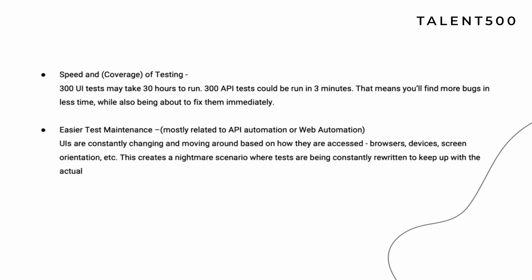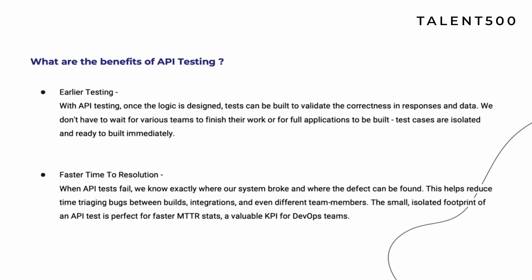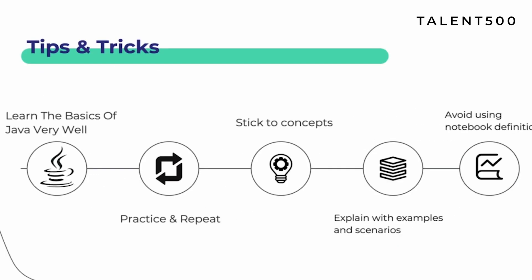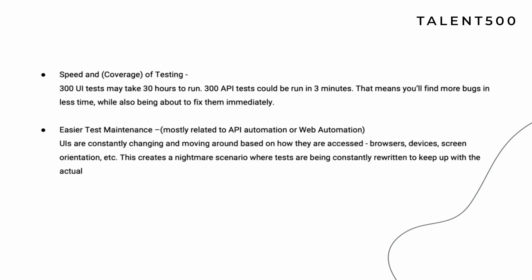The last point is easier test maintenance, though I don't agree with it all the time from my experience. You can skip this point if needed — the three key benefits are: earlier testing, faster time to resolution, and speed and coverage of testing. Always have an example ready when answering API testing interview questions. Without an example, your answers will not be taken as seriously.